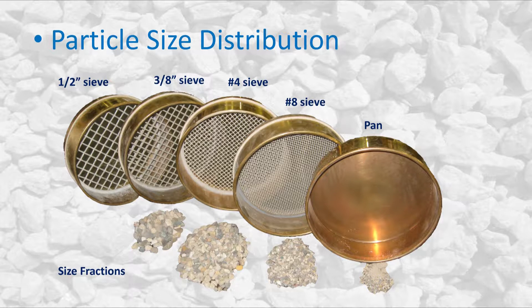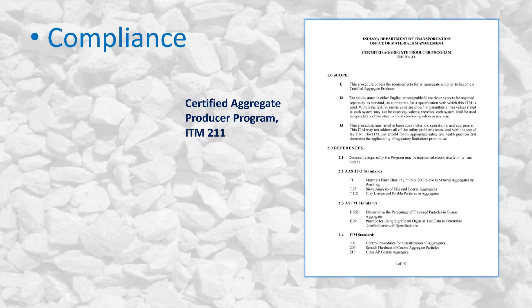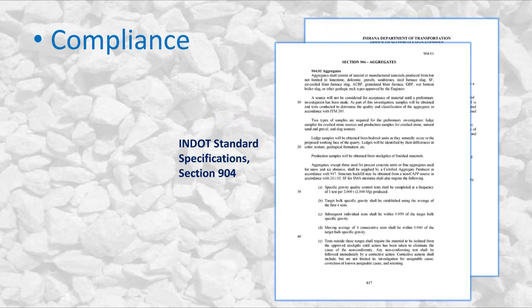The sieve analysis is commonly known as the gradation test and is used to determine the distribution of aggregate particle sizes within a given sample. Gradation testing is necessary to determine compliance with the requirements of the Certified Aggregate Producer Program in Section 904.03 of the INDOT standard specifications.